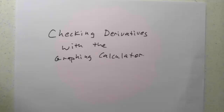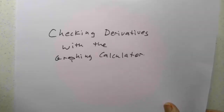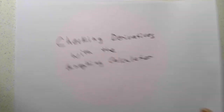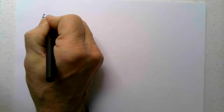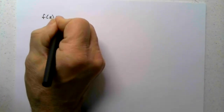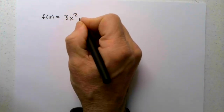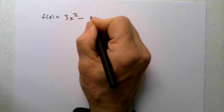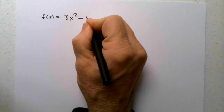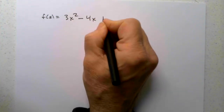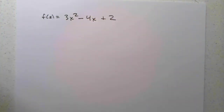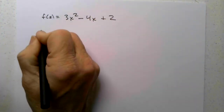This lesson is on checking derivatives with the graphing calculator. Let's do one. I will say f of x is 3x squared minus 4x plus 2, and I want to find f prime of x.